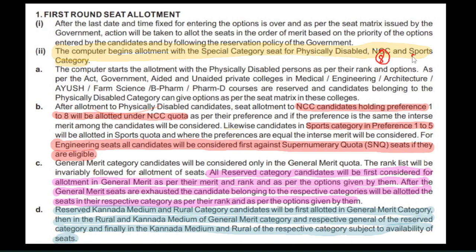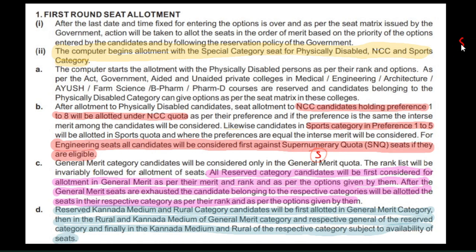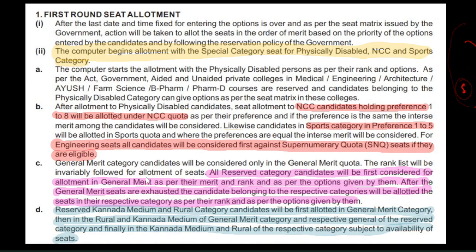For NCC, there are 8 seats per college, and for sports, there are 5 seats per college. If you are eligible and in a good position, first the SNQ seats are targeted. If eligible, your name is tagged in the SNQ category first, before the general merit category seats.